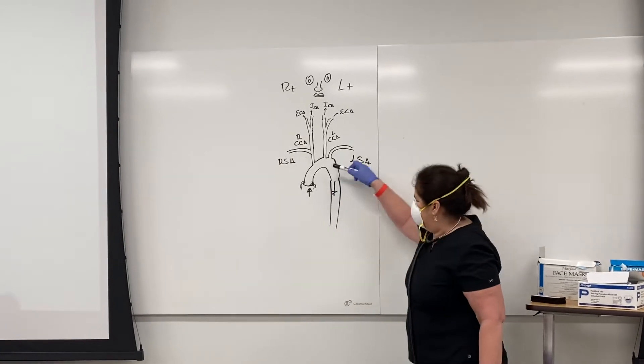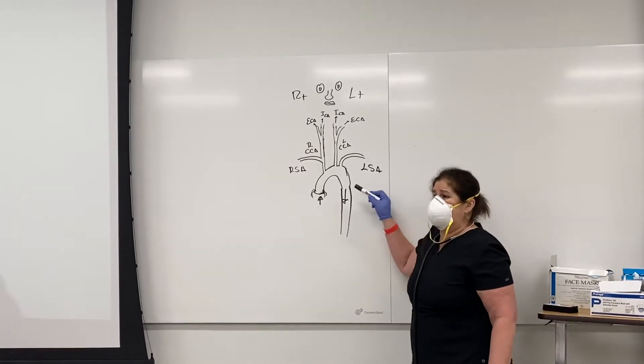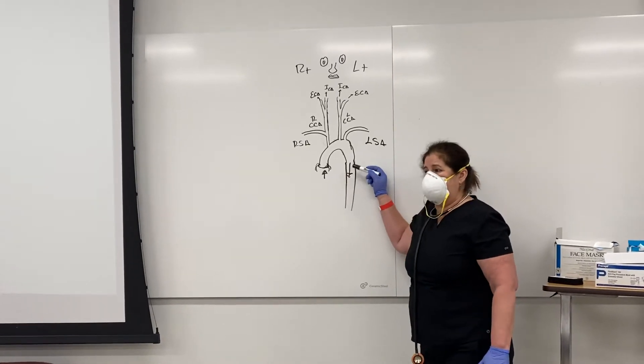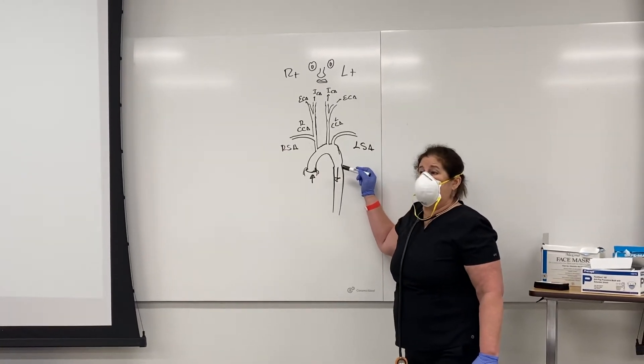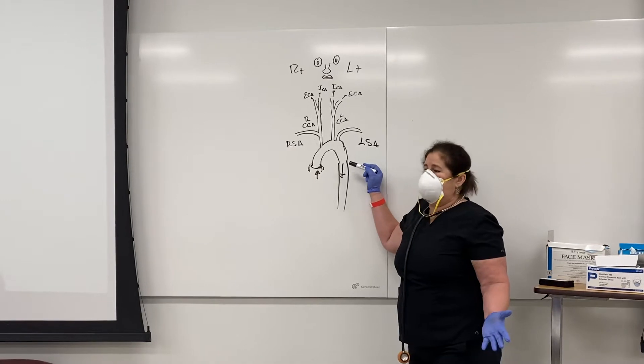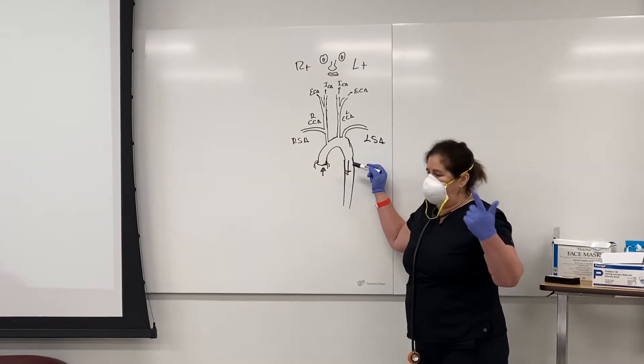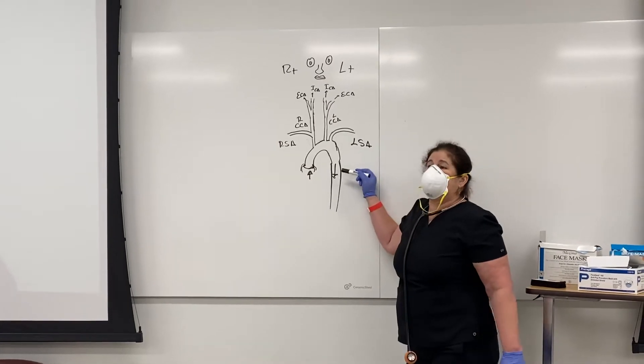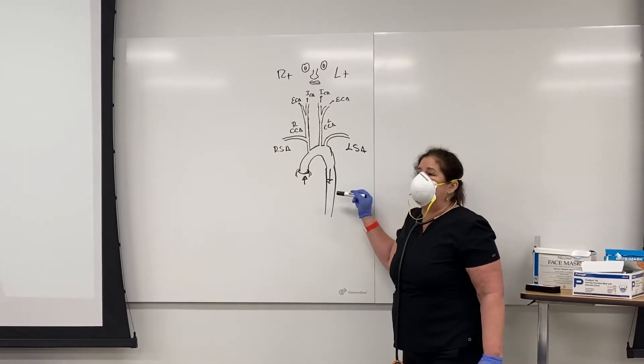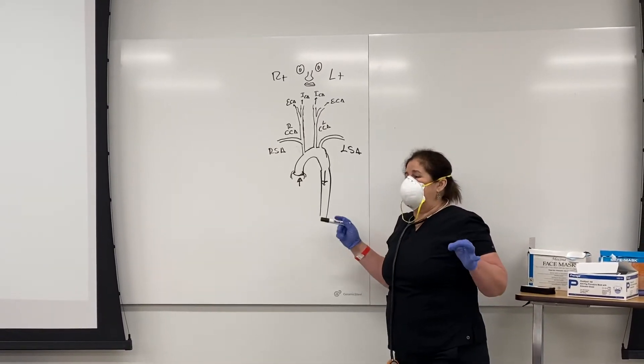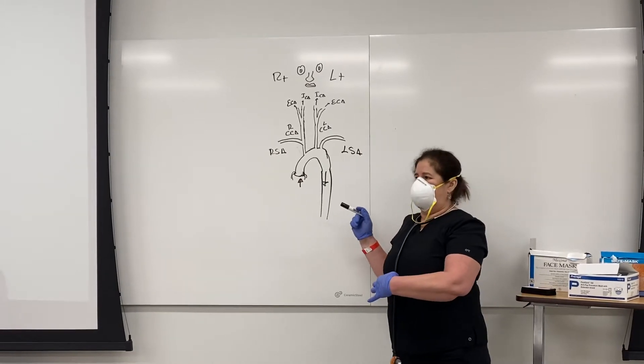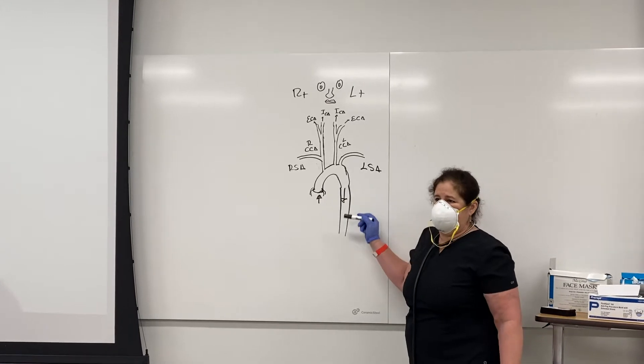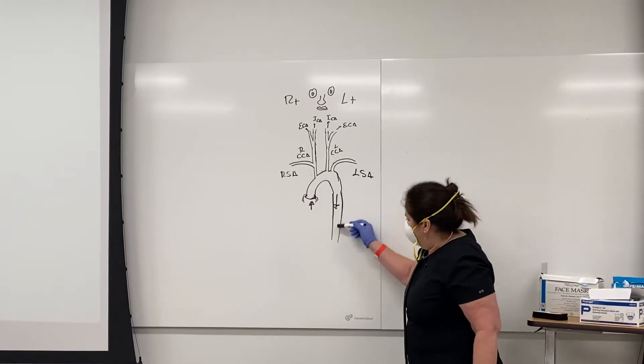The descending aorta artery is going to be located posteriorly in the thorax and goes very close to the anterior part of the vertebrae, at the front of the vertebral bodies, okay? Running all over.